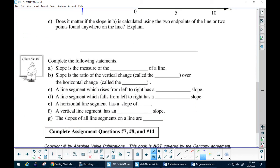Now let's just fill in these. Slope is the measure of steepness of a line. All right, that's what slope tells you. Slope is a ratio of vertical change, called the rise, over horizontal change, called the run. And that's why we have rise over run: y2 minus y1 over x2 minus x1.